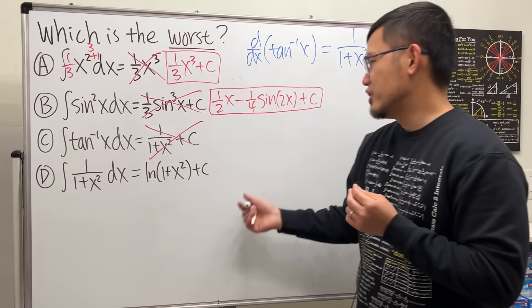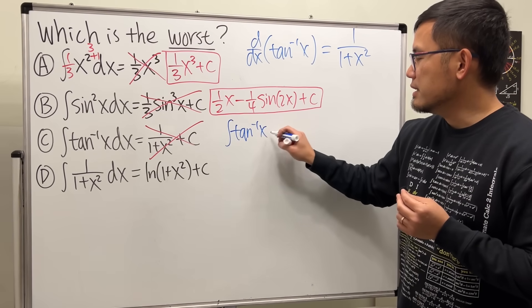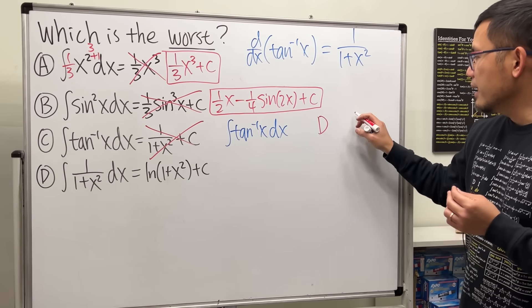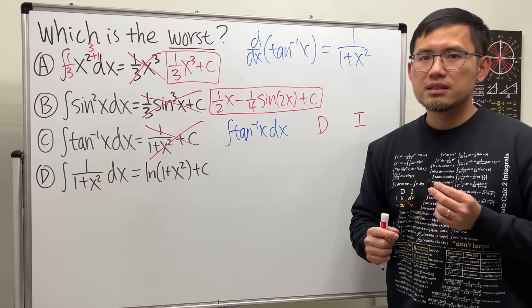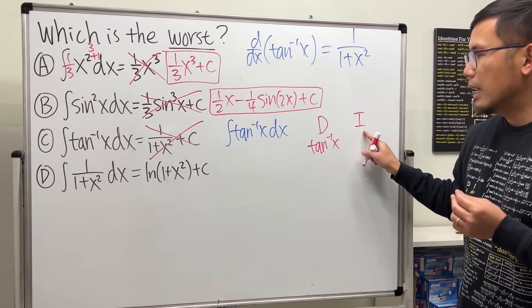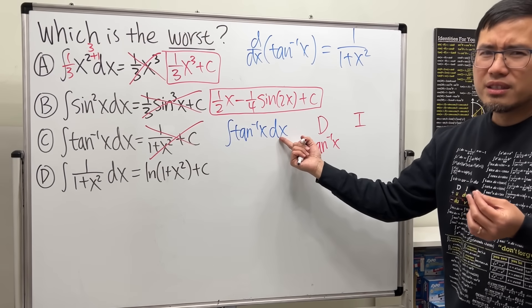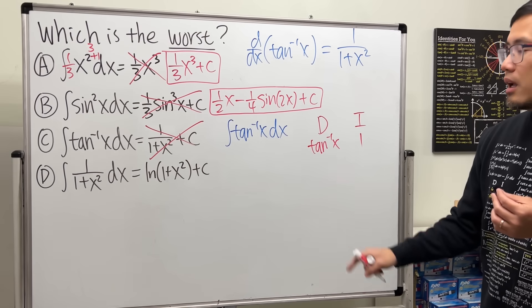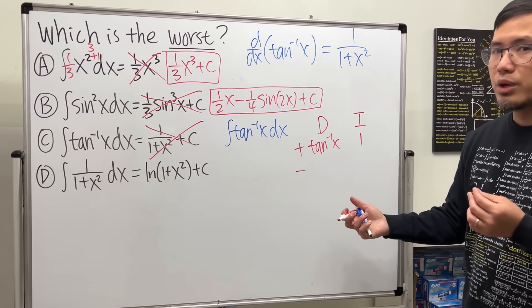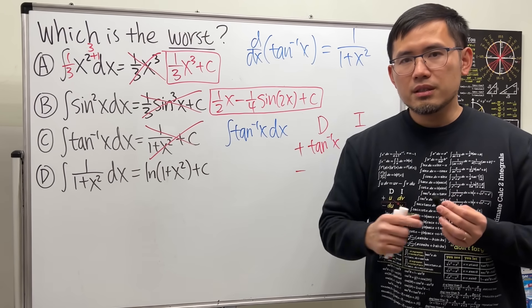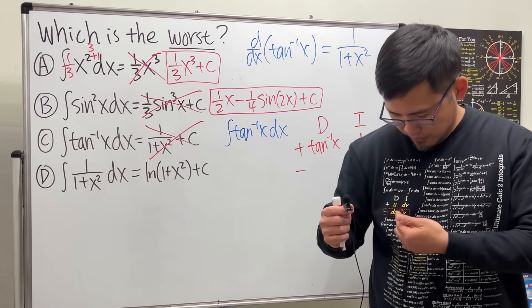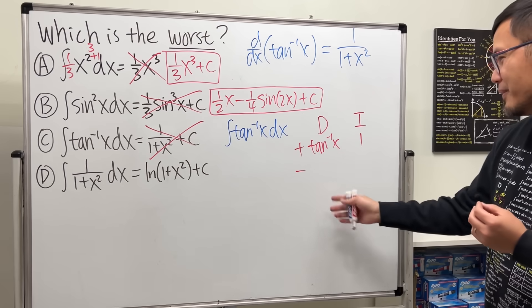Inverse functions are usually integrated using integration by parts. We can't integrate arctan(x) directly, so we differentiate it and integrate the other part — which is just 1, since arctan(x) times 1 equals arctan(x). In the DI method: D means differentiate, I means integrate, and we set up the plus/minus column. This is equivalent to the formula: ∫u dv = uv − ∫v du.